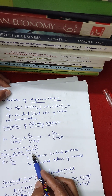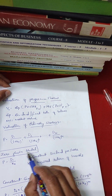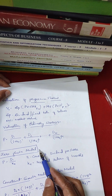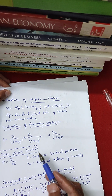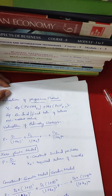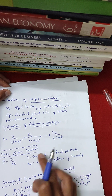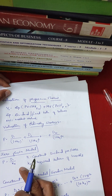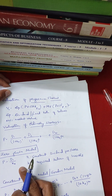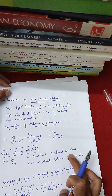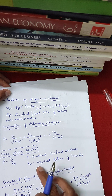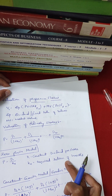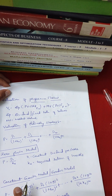Zero growth model: when growth G equals zero, P is equal to D1 divided by KE, where D1 is the constant dividend per share and KE is the required return of the investors.